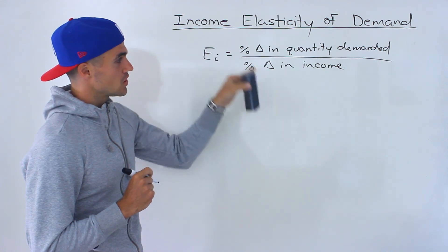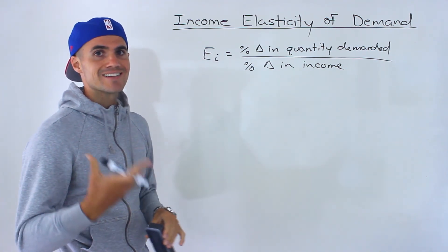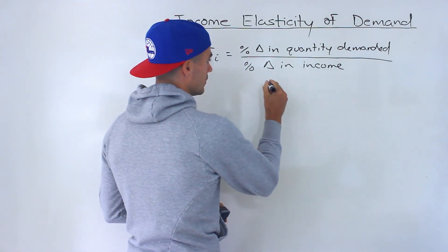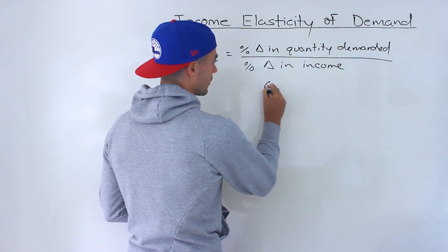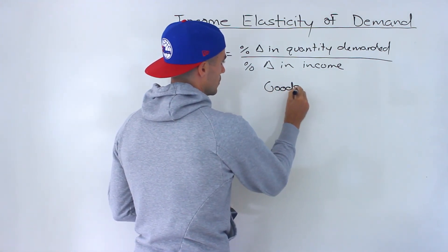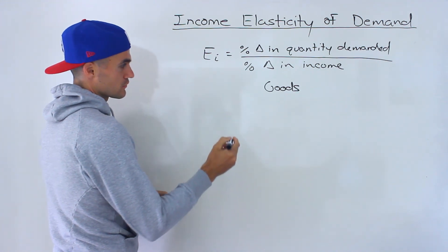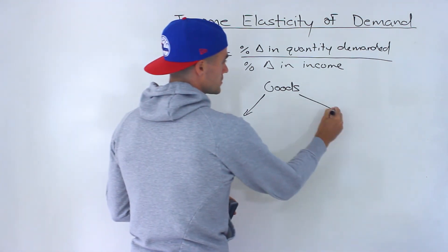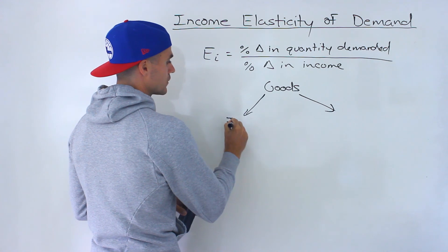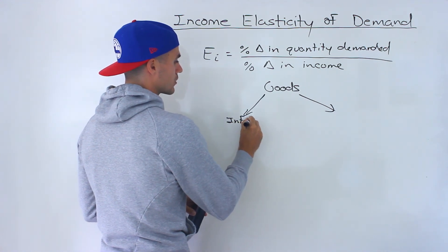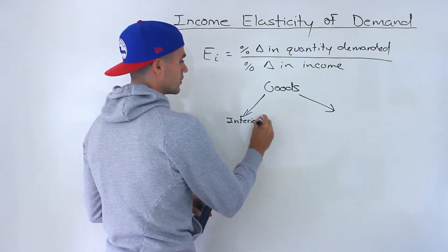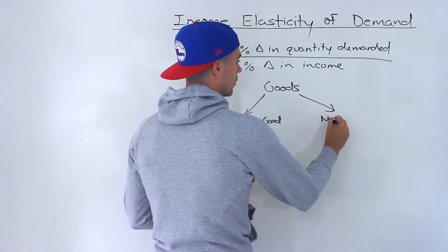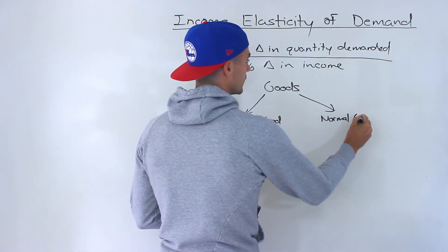The result of this calculation is going to tell us the type of good that we are dealing with. The two main categories for goods or a service is it's either going to be an inferior good or a normal good.